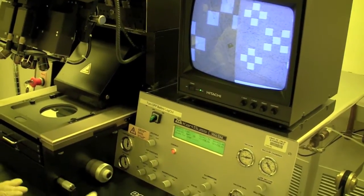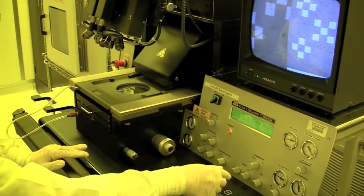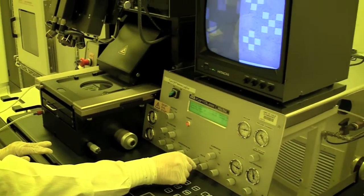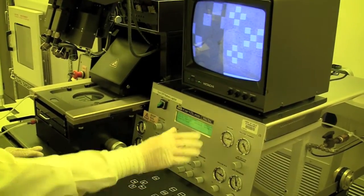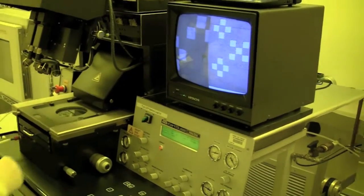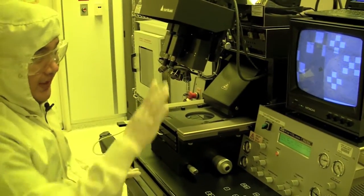The two things you can adjust are the focus or the power of the density. Once you find your alignment marks, the plan is to take a picture of this.